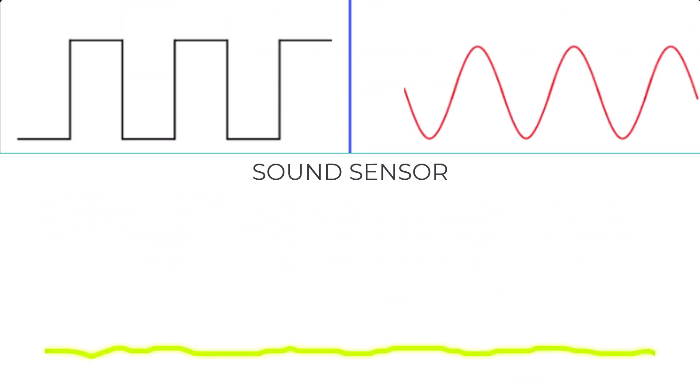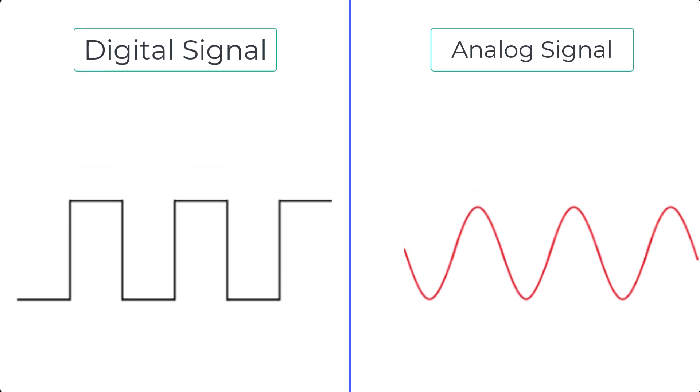Let's compare these two signals side by side. The digital signal is either on or off, with no middle ground.